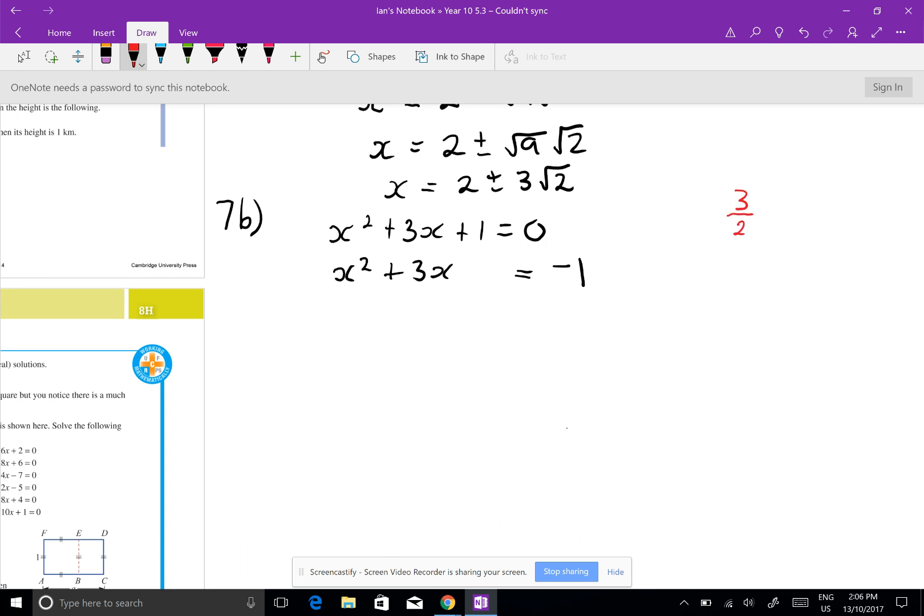So 3 over 2 squared equals 9 over 4. Now can you please leave it as an improper fraction in both cases because it's going to make it easier. So I'm going to add 9 over 4, and I'm going to add 9 over 4.